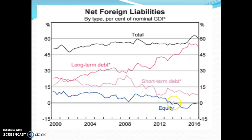At the moment, net foreign equity is just below zero — we have negative net foreign equity, meaning our investments overseas exceed foreign investments in Australia. However, net foreign debt is significant, with both long-term and short-term debt quite high. Most of our debt is long-term debt.